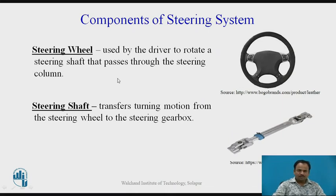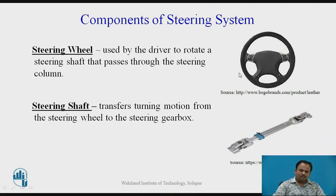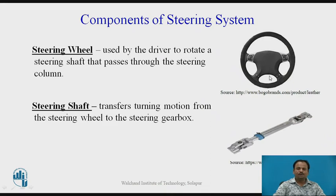The first component is the steering wheel, which is used by the driver to rotate the steering shaft that passes through the steering column. The steering wheel has a ring of pipe with an elliptical cross-section, with spokes welded together at a center hub. For cars, the diameter ranges from 41 to 45 cm, and for commercial vehicles, 50 to 55 cm. The steering wheel is designed to provide comfort to the driver according to the cabin space.